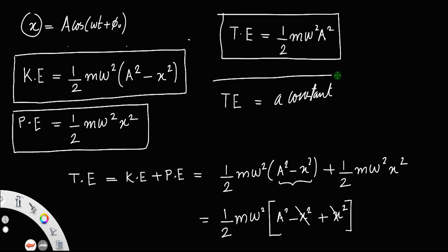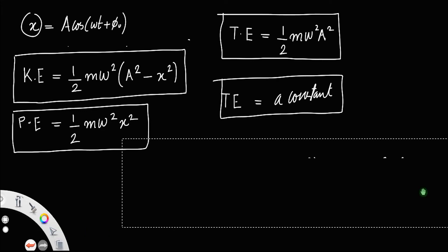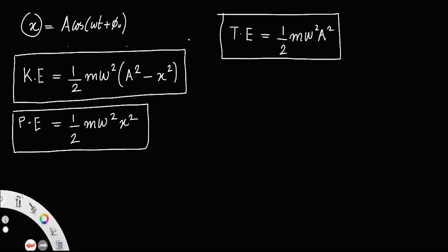From the equation it is clear that ½ is constant, mass of the body does not change, angular frequency does not change, and the amplitude also does not change. Therefore total energy is a constant. Total energy = ½mω²A² = constant.